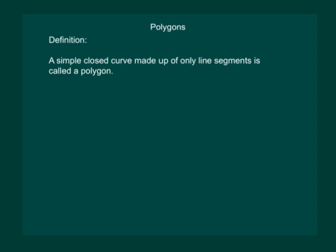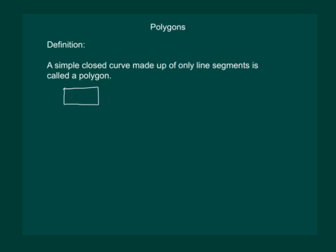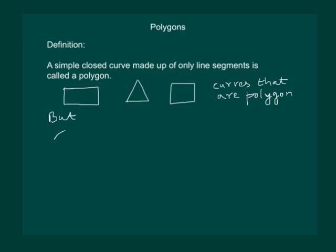A simple closed curve made up of only line segments is called a polygon. That would mean a rectangle, a triangle, a square are all curves that are polygons.